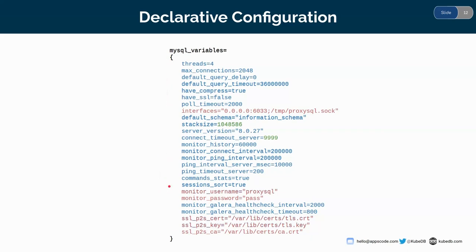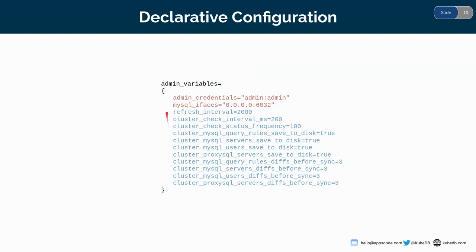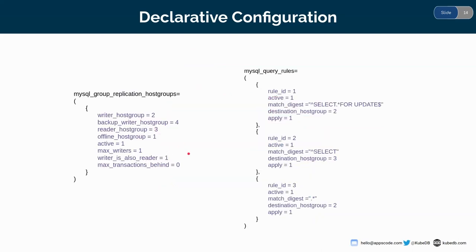This is the basic default setup for MySQL variables. Here you can see the default setup for admin variables that KubeDB sets, and these two are the reserved fields. As for MySQL group replication host group, this is not configurable by the user — this is the default value we provide. As for MySQL query rules, we provide this as the default. If you don't give any value we bootstrap ProxySQL with this, and if you give any single MySQL query rule, none of the defaults would be applied and your provided one would be taken as the source of truth.